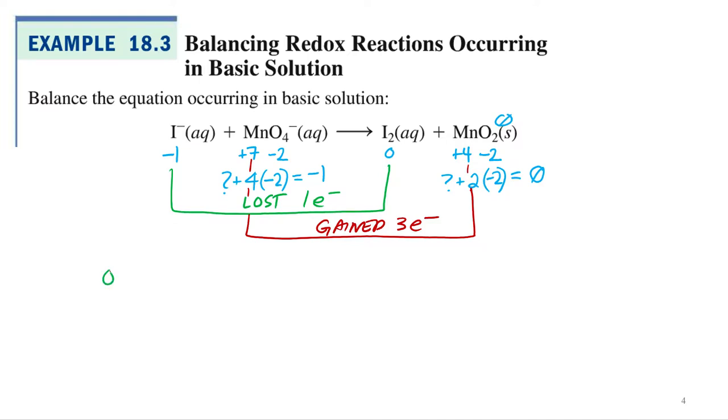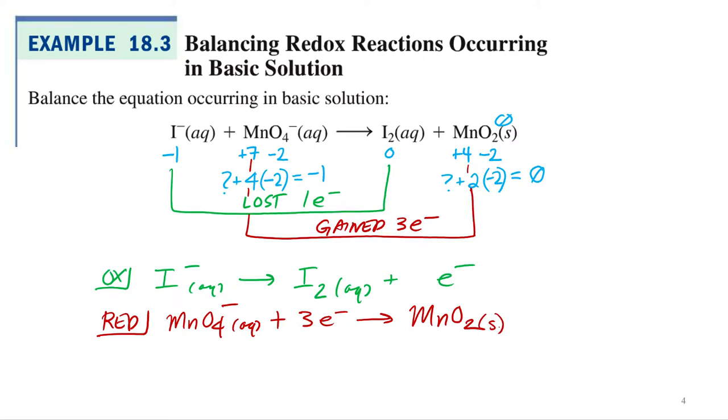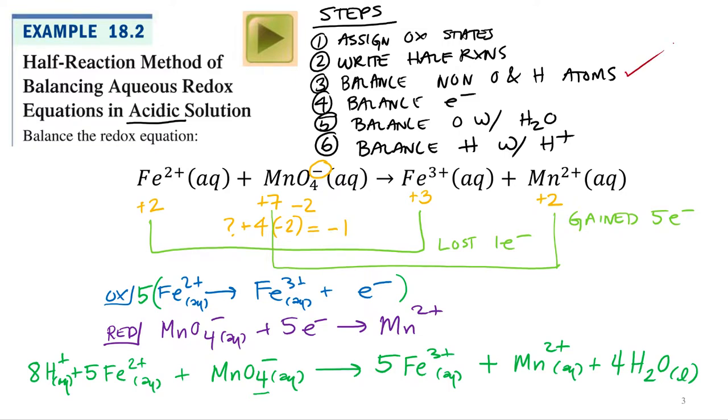All right, so let's write those out. Iodine lost. So that's my oxidation, right? Iodide goes to iodine plus 1 electron initially. And then my reduction half reaction is permanganate plus 3 electrons. All right, so this step we haven't done yet. This step we're going to have to do now.